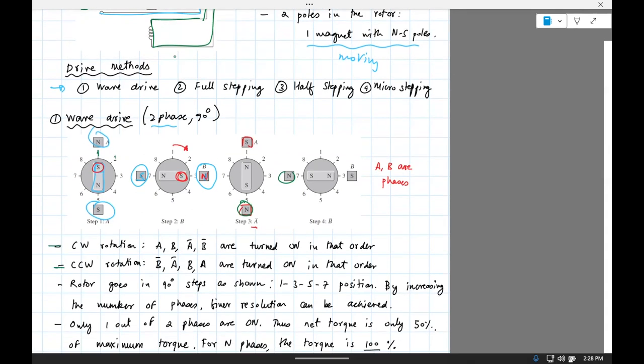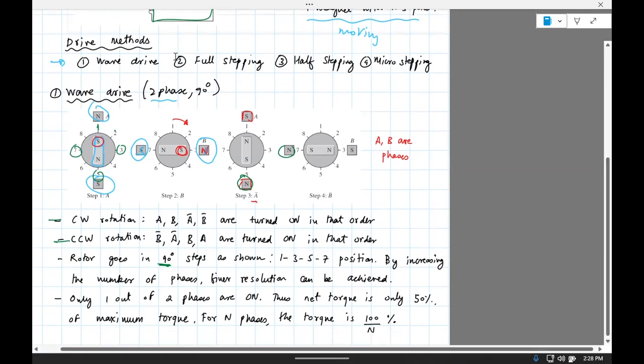So this one basically turns 90 degrees in steps. Clockwise, counterclockwise, you can reverse the logic to get counterclockwise. I said 90 degrees in steps, these are positions one, three, five, seven, and nine.